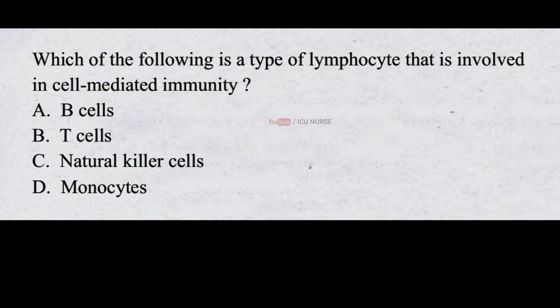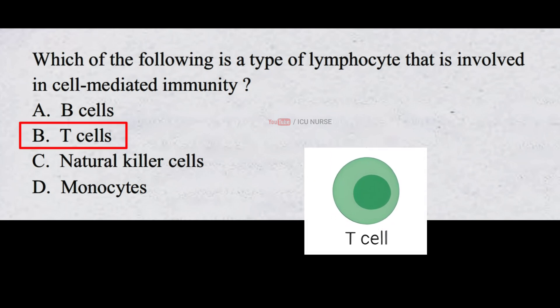Which of the following is a type of lymphocyte that is involved in cell-mediated immunity? A. B cells B. T cells C. Natural killer cells D. Monocytes. The correct answer is B. T cells. T cells are the type of lymphocytes that are involved in cell-mediated immunity.